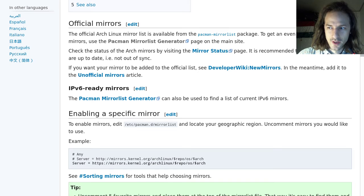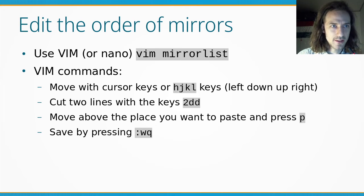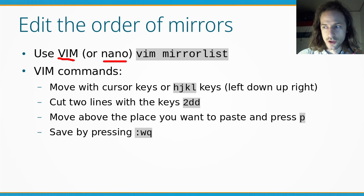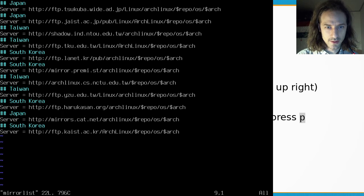We've created our new mirrorlist, but you may want to reorder some of the mirrors. For example, I want to put the ones in my country at the top so the first attempt always goes to a local server. You can use either vim or nano — both are available on the Arch ISO. Let's try vim first: vim mirrorlist. You can see our mirrorlist file is now open.